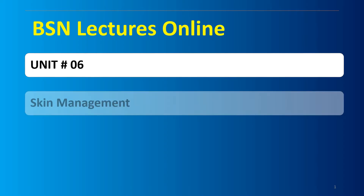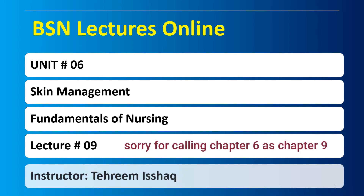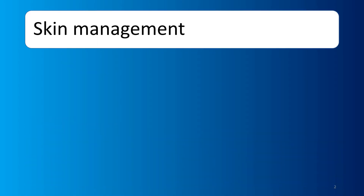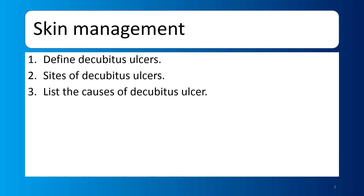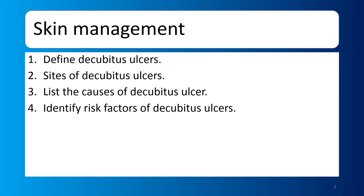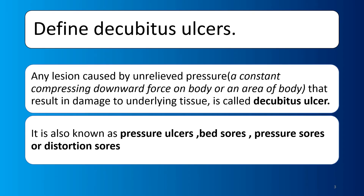Today we are going to start our chapter number 9, that is skin management, fundamentals of nursing. First of all, we will see the questions asked in your content: Define decubitus ulcers. Sites of decubitus ulcer. List the causes of decubitus ulcer. Identify the risk factors of ulcers. Apply nursing interventions to prevent decubitus ulcers. We will cover all these questions in the same lecture, so please watch the video till the end.